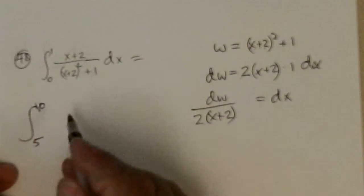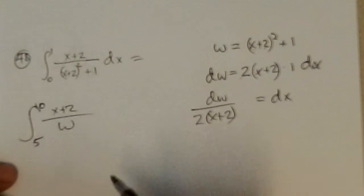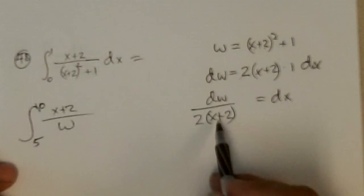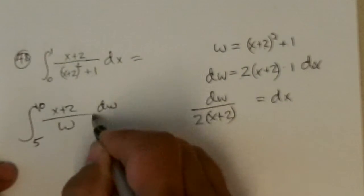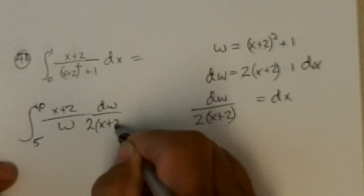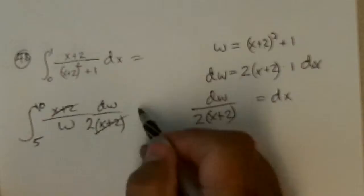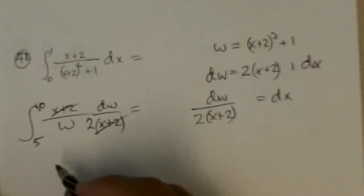5 to 10 of (x+2) over w, and dx is dw over 2(x+2). The (x+2) cancel, so I got the integral of 1 over w, dw evaluated from 5 to 10.